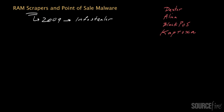Some of the more prominent examples of RAM scrapers include things like Dexter, Alina, Black POS, and Cartoha. In that last example, the pronunciation is actually based on the sounds that the letters make with respect to the Cyrillic alphabet rather than the Roman alphabet.